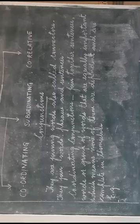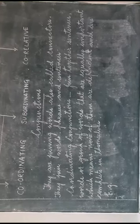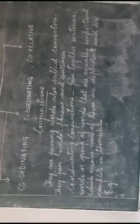Coordinating conjunctions actually connect two sentences of equal rank. Like 'Ram sells eggs, Ram sells meat.' If I have to connect these two sentences putting in one conjunction, I'll say 'Ram sells eggs and meat.'